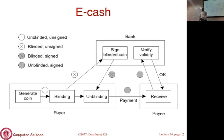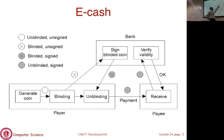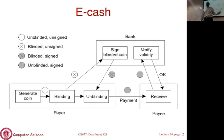The bank signs the blinded coin and hands you back a signed coin. At that point you can unblind it — here's a coin with a serial number and a signature proving it's legitimate. Importantly, when you unblind it the bank doesn't actually know which serial number is attached to who, just as physical cash notes have serial numbers but the bank doesn't track which specific note it issued to you. So you can make payment with electronic cash, and the payee can go to the bank to verify the signature and accept it as legitimate currency.